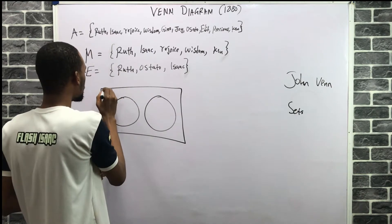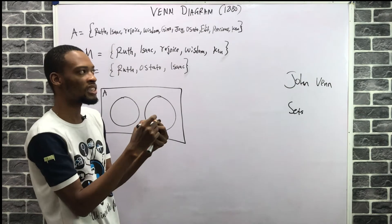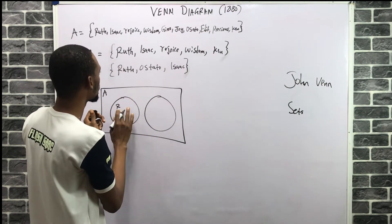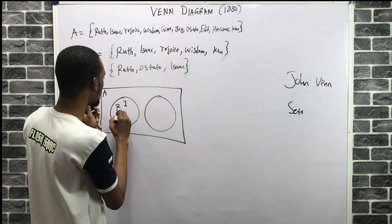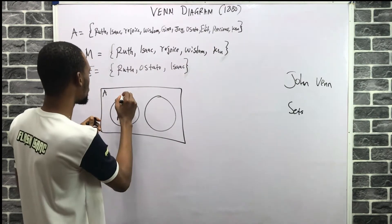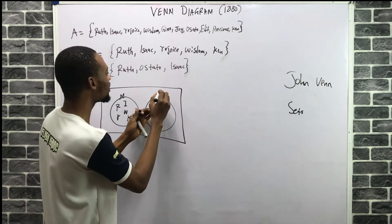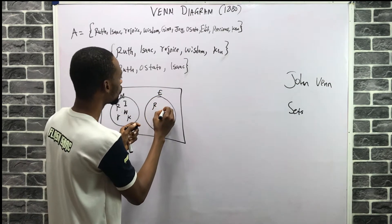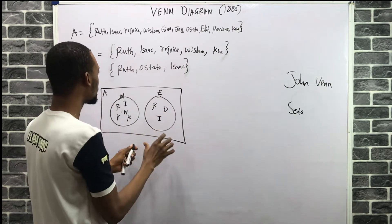This is set A. Those who love mathematics — let's represent them with their initials: R, I, and another arrow, W and K — so these love mathematics. Then over here for English: R, O, O, I — these guys love English.